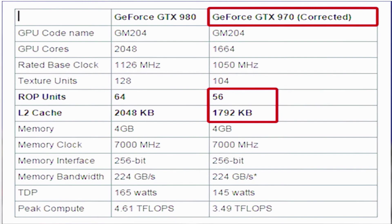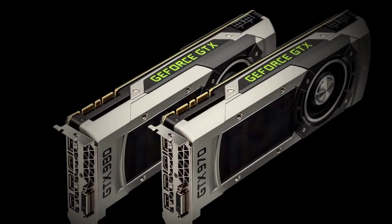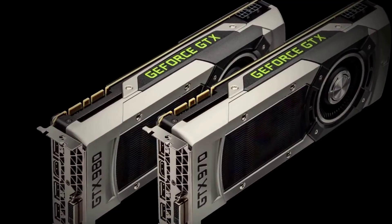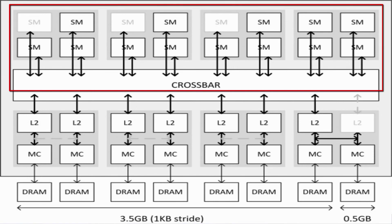NVIDIA stated that this incident occurred due to a communication error between the engineers and the technical PR team. It also involves the disabling of an L2 ROP module. We can see this in a diagram provided by NVIDIA to PC Perspective: on the right-hand side, the first L2 cache module is disabled while all others remain active. The first two modules on the right side got disabled in order to reduce the VRAM from 4GB to 3.5GB.